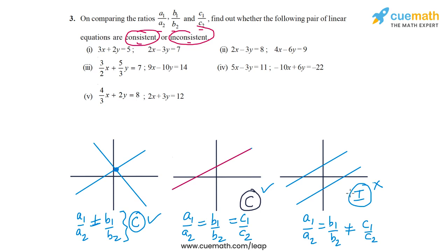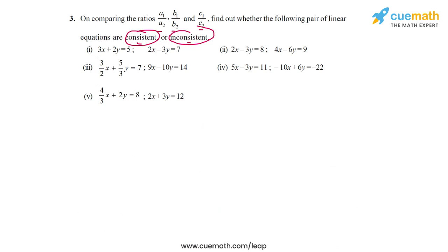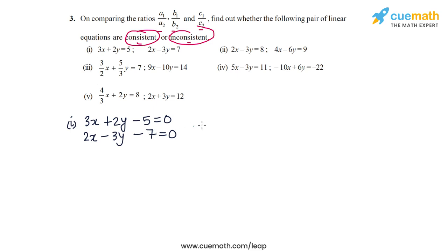Now let's apply these ideas to each given pair of equations. The first pair is 3x + 2y = 5 (or 3x + 2y − 5 = 0) and 2x − 3y − 7 = 0. A1/A2 equals 3/2 and B1/B2 equals 2/(−3). These two ratios are unequal, so we don't need to check C1/C2. Since the ratios are unequal, this pair will have a unique solution — in other words, this pair is consistent.